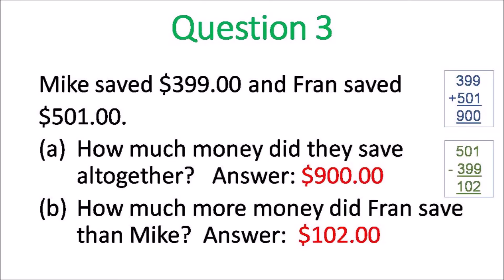Question 3. Mike saved $399 and Fran saved $501. How much did they save altogether? You add $399 plus $501 and you get $900. Now, how much more did Fran save than Mike? You subtract: $501 minus $399 equals $102.